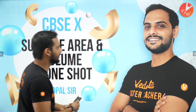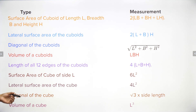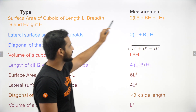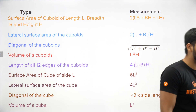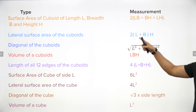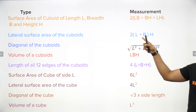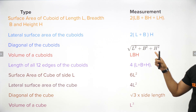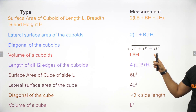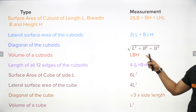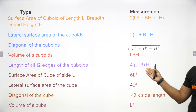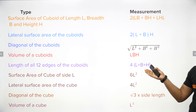Let's start with the formula sheet. Surface area of a cuboid of length l, breadth b, height h: total surface area is 2(lb + bh + lh). Lateral surface area of the cuboid is 2(l + b)h. Diagonal of a cuboid is √(l² + b² + h²). Volume of a cuboid is l × b × h. Length of all 12 edges: there are 4 edges of length l, 4 of b, and 4 of h.